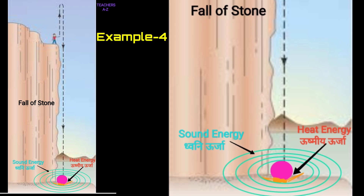Example 4: Conversion of kinetic energy into sound and heat energy — Gatij Urja ka Dhwani aur Ushmiya Urja mein Parivartit. When the falling stone hits the ground, sound is heard and the ground where the stone hits becomes hot. So kinetic energy of the stone is converted into sound energy and heat energy.